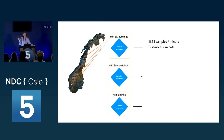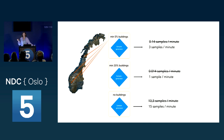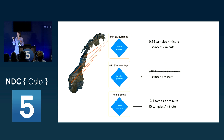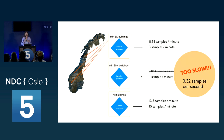This improves speed from 0.14 samples per minute to 3 samples per minute for the 5% rule, with similar improvements for others. But it's still not close to good enough.